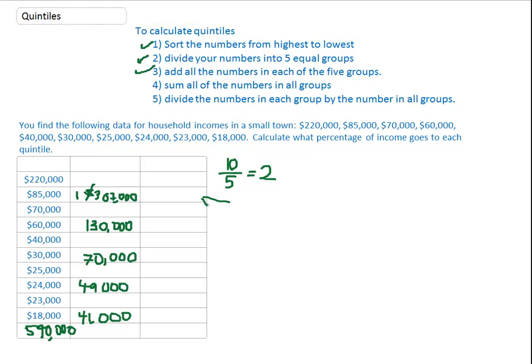So what percentage? So right here, we're going to take the $307,000 divided by our total of $590,000. And I get 51.4%. Or I'm going to just put it in decimal terms. That's 51.4%. The next quintile, I calculate it's about 21.8%.